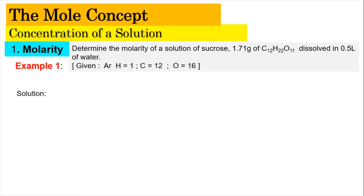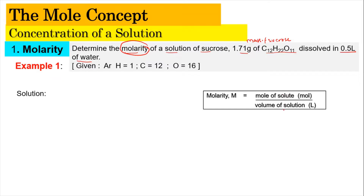For example 1, we have to determine the molarity of a solution of sucrose: 1.71 grams of C12H22O11 dissolved in 0.5 liters of water. Here we are given the mass of sucrose and the volume of water, and we need to find the molarity. Molarity is basically moles of solute divided by the volume of the solution. We have a certain amount of sucrose — 1.71 grams — dissolved in 0.5 liters of water to form a sucrose solution.